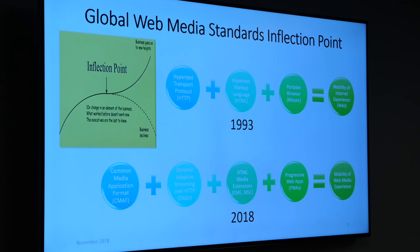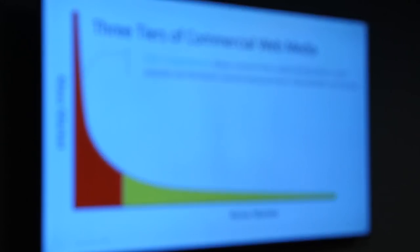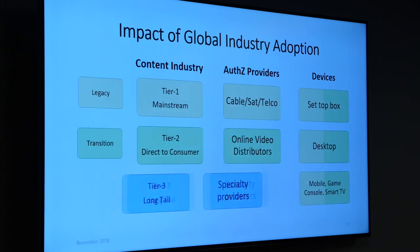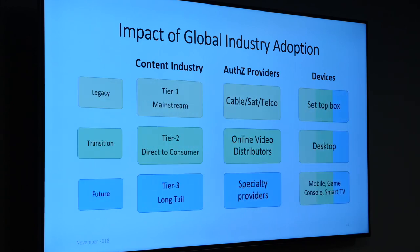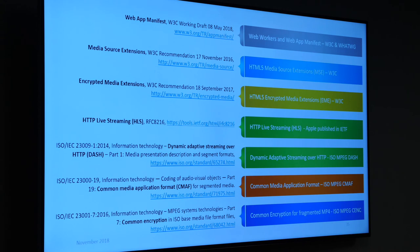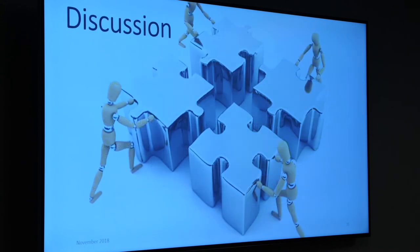My expectation is that in the coming years we're going to see large-scale growth of commercial media services on the web. This means a lot of long-tail content — every sports franchise becomes a live linear channel on the web. Devices will be able to incorporate this capability, and it will be an explosion of devices. We're at 120 billion devices now and all of them are going to be IP-enabled and consuming media. When I give you the deck, you'll get references for all these specs. Thank you.